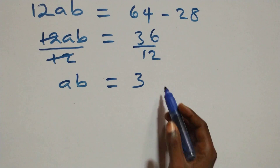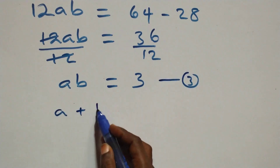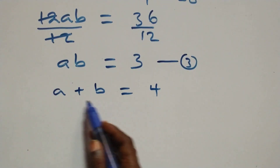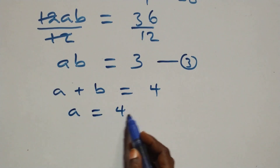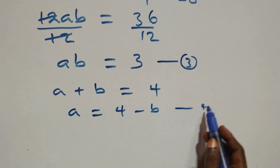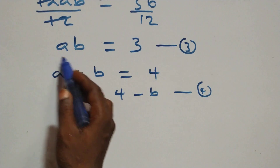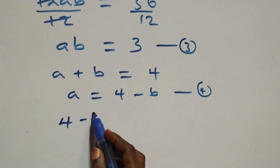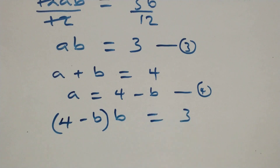From equation 1, a plus b equals 4, we make a the subject: a equals 4 minus b. We label this as equation 4. Substituting equation 4 into equation 3, we get (4 minus b) times b equals 3.